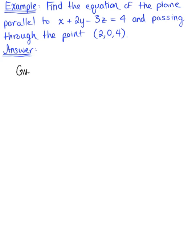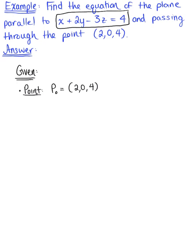Let's think about what we're given here. We know that we want the equation of the plane that passes through this given point. So we can say that our point P-naught is defined by the ordered triplet 2, 0, 4. And we're also given a plane that we want the new plane to be parallel to — we'll call this our parallel plane, defined as x plus 2y minus 3z is equal to 4.